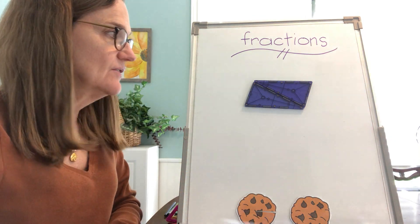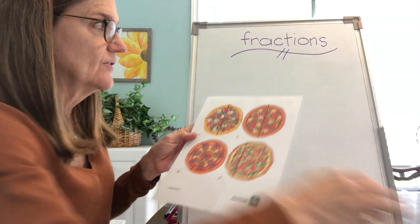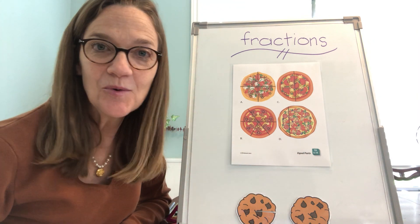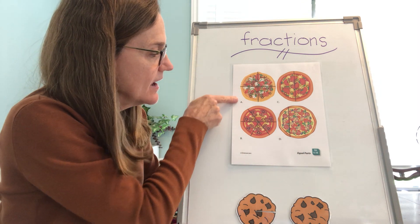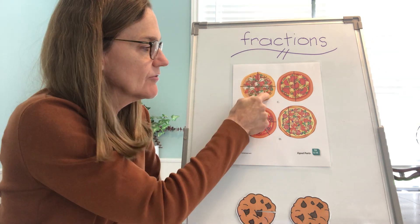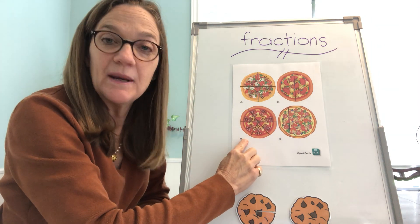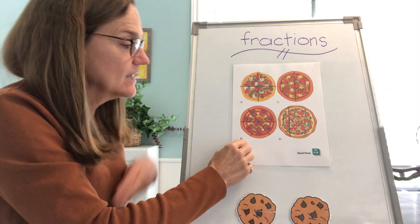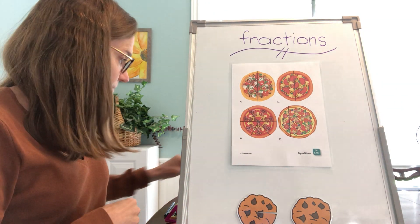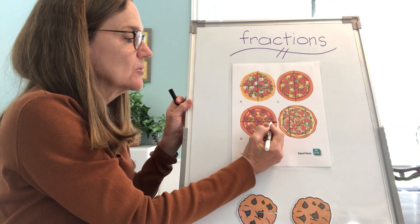Let me show you a couple of pizzas. I want you to tell me which pizza or pizzas have been divided into equal parts. Look at pizza A. Look at each part carefully — are they equal? Down here is pizza B. Look at pizza B. Can you see the lines on pizza B? Let me go over them with my dry erase expo marker.